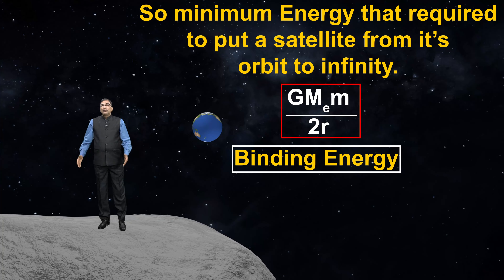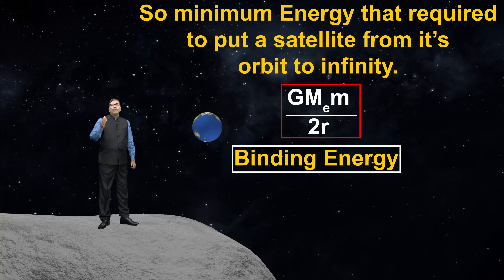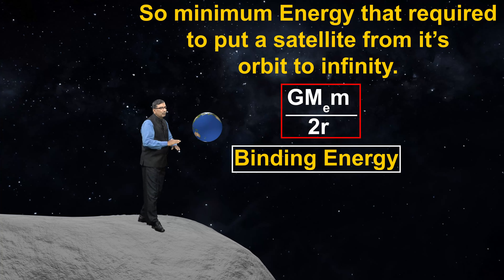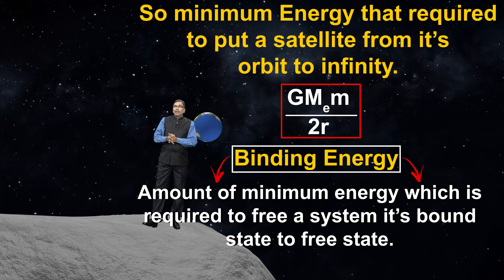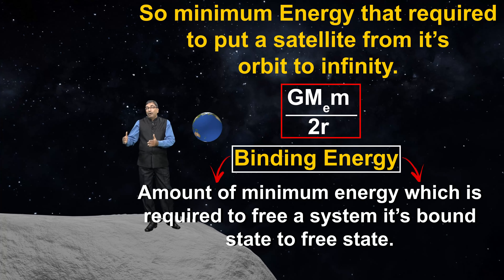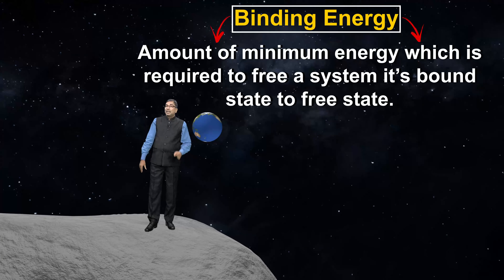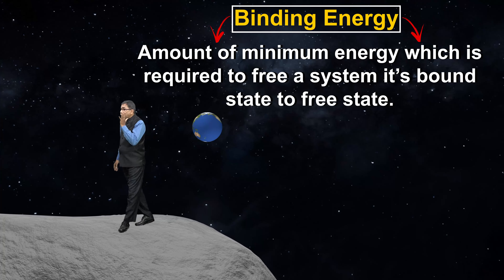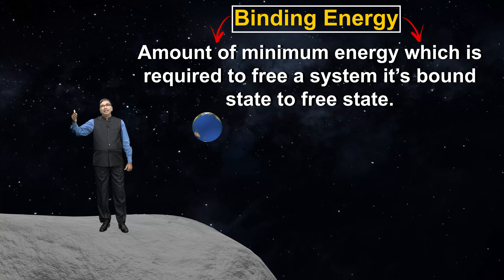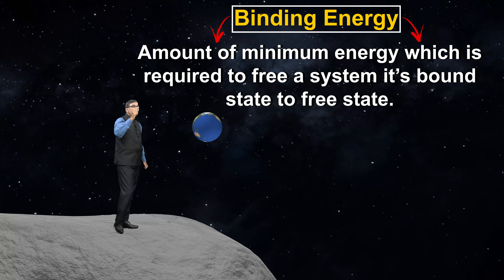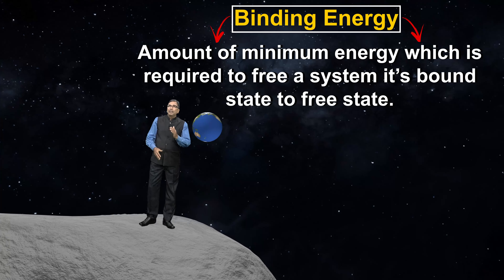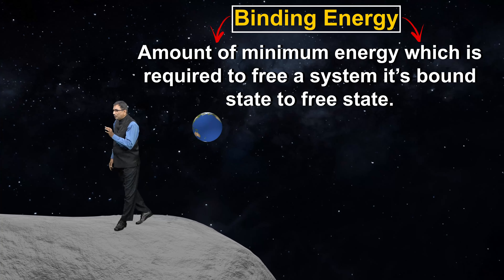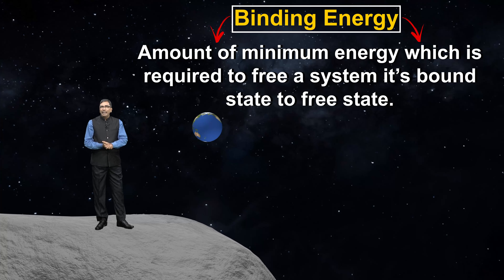Why is it called binding energy? Because when the satellite is in its orbit, the gravitational force acts on it and it is bound. When it goes to infinity, no force acts on it — it is free. The energy at infinity is called the free state energy because that state is free. When the satellite is moving in its orbit, it is in a bound state. So the minimum energy required to free a system from its bound state to the free state is known as binding energy.